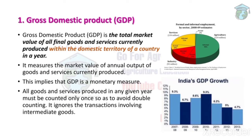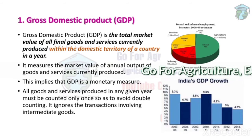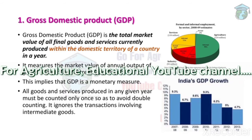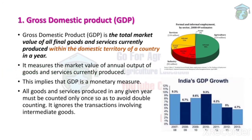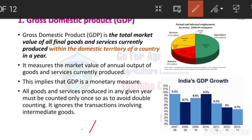GDP means the total market value of goods and services produced within a country. 'Within a country' means produced by an Indian citizen. For example, say there is an XYZ company, and this company's branch is only within India — it will produce some goods or products, and that product will have a value in our country.